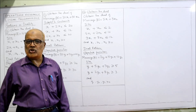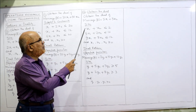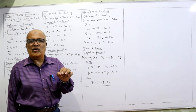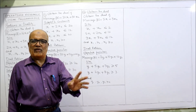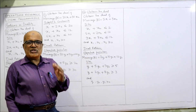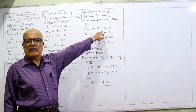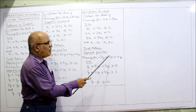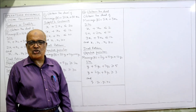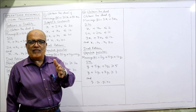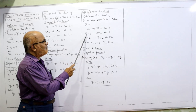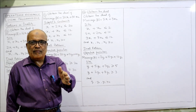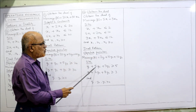The dual objective function is: Minimize Z = 2Y1 + 10Y2 + 12Y3. For the constraints, vertical columns become horizontal rows. For X1: coefficients are 1, 5, 3 vertically — horizontally: Y1 + 5Y2 + 3Y3.